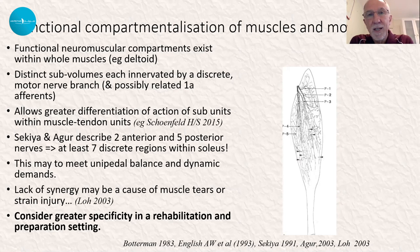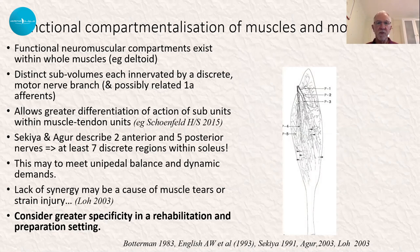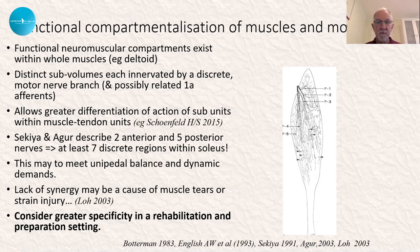This was further explored by Lowe in 2003. He felt there's the possibility that if there's a lack of synergy between these compartments, that may contribute to calf muscle tears or strain injury. This is something we should take on board and look at with greater specificity in our rehabilitation of medial, lateral, anterior, and posterior compartments, and also perhaps the way we prepare these for the particular demands of specific sports.